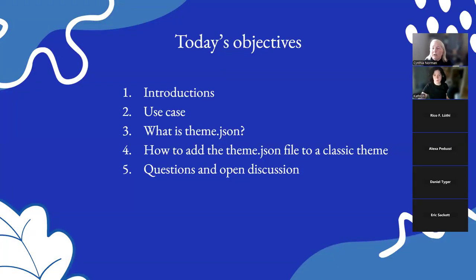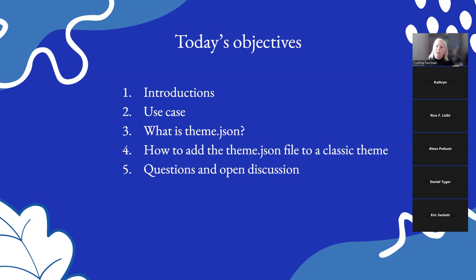Today's objectives: after a brief introduction, I'm going to introduce a use case I'm currently in the middle of — it actually started two years ago, so it's quite a big project. I'd like to share it to illustrate how we can bring classic themes into modern WordPress. Then I'll talk about theme.json in a general basic manner and give you a quick demo using a couple of classic themes. I'll also walk you through adding theme.json to a classic theme. My goal is to leave about 10–15 minutes at the end for questions and open discussion.